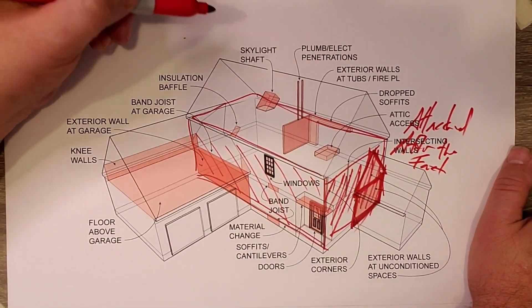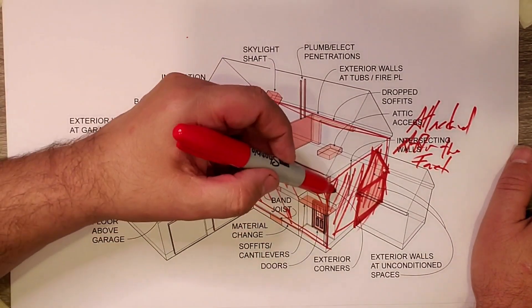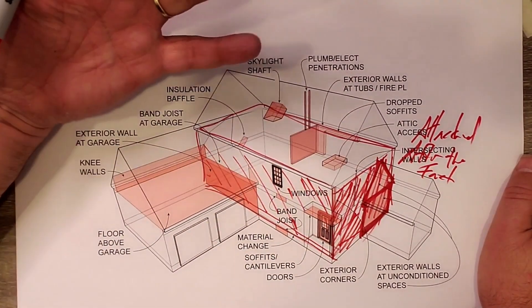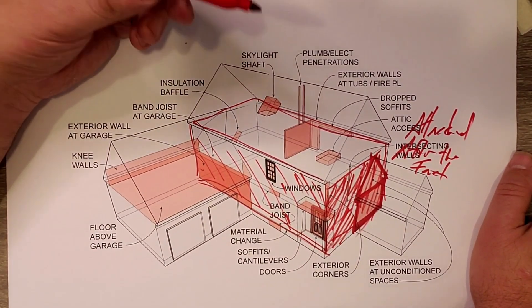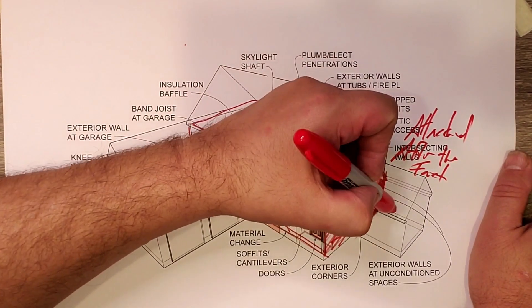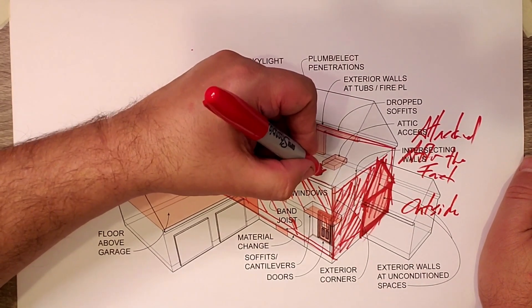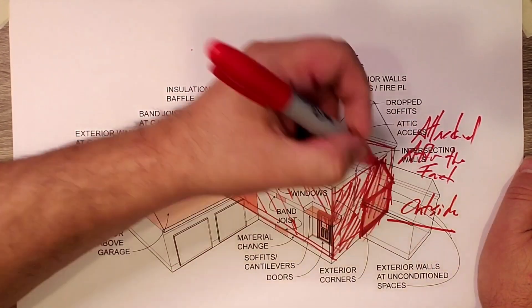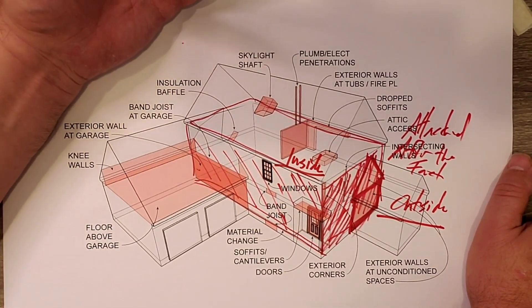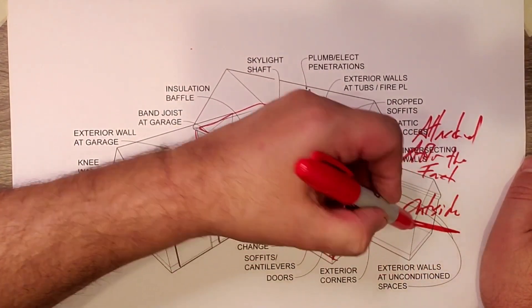When it comes to air barriers, you've heard me say it a million times, but we're going to say it again. When you have your air barrier — in the case of the video and here with the zip R sheathing — you are either outside or you are inside. You can't be in a gray area. There is no maybe, there is no kind of — you are either inside or you are outside.